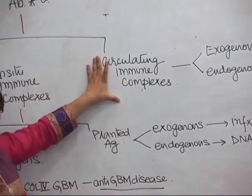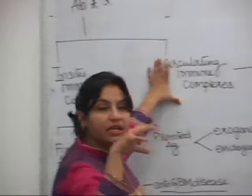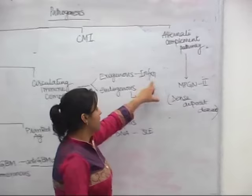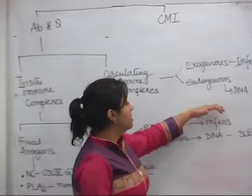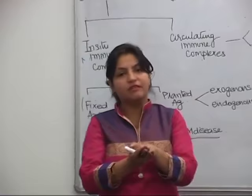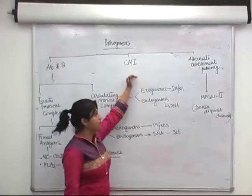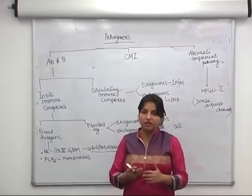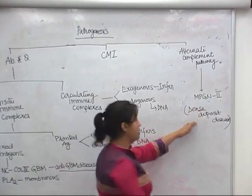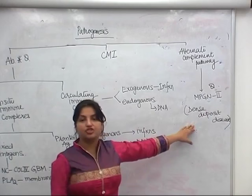Circulating immune complexes are formed outside the kidney and get trapped in it. Their antigens can similarly be exogenous - from infections - or endogenous proteins like DNA. The second mechanism is cell-mediated immunity, likely involving T lymphocytes causing injury, though this pathway is not yet well established. The third mechanism is activation of the alternate complement pathway, which is well documented in MPGN type 2, also known as dense deposit disease.